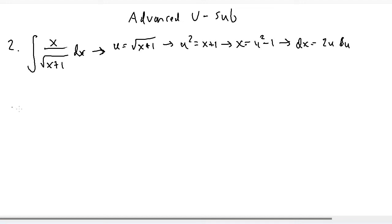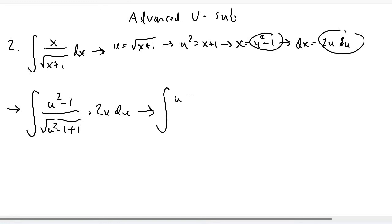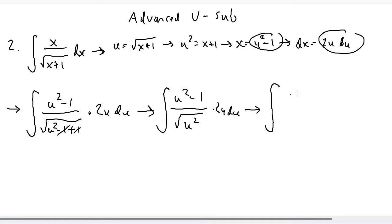Now I can plug everything back in. Everywhere it says x I plug in u squared minus one, and where dx is I plug in 2u du. So I get the integral of u squared minus one over the square root of u squared minus one plus one, multiplied by 2u du. The negative one and positive one cancel, leaving the square root of u squared, which is just u. So we get the integral of u squared minus one over u, times 2u du.